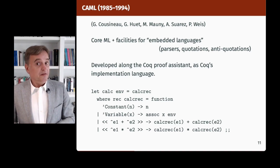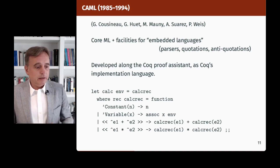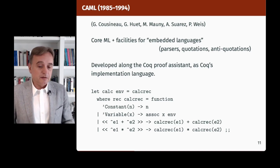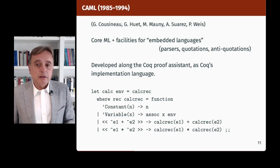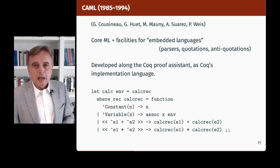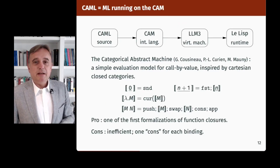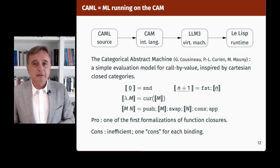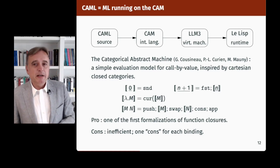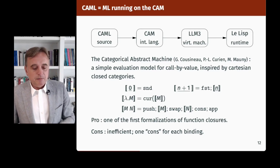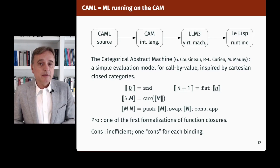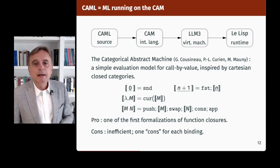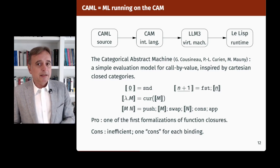CAMEL was developed alongside the Coq proof assistant, basically as Coq's implementation language. In the early 80s, Roger Hindley decided the Calculus of Constructions would be implemented not in Lisp, as in his previous project, but in a language with more types, so he chose ML. What gives CAMEL its name is actually its implementation technology — it's ML running on the CAM. It was implemented on top of a Lisp runtime system, the LLisp system and its LLM3 virtual machine, but it would compile for an intermediate language based on the CAM, the Categorical Abstract Machine, worked on by Guy Cousineau, Pierre-Louis Curien, and Michel Mauny.